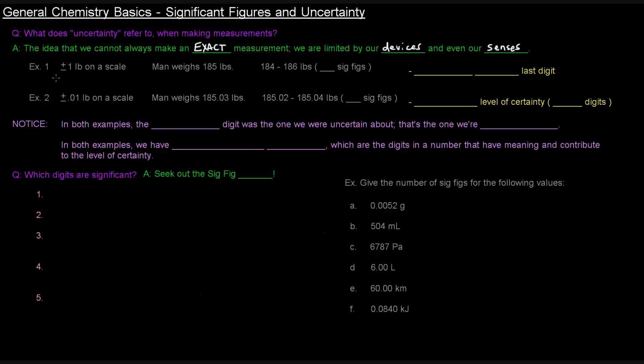So the idea is some scales are accurate within a pound, plus or minus one pound on a scale. So let's say a man's true weight is 185 pounds. The scale might read 184, it might read 186, it might read 185. The idea here though is that we are uncertain about that last digit, whether it's going to be a 4, a 5, or a 6.